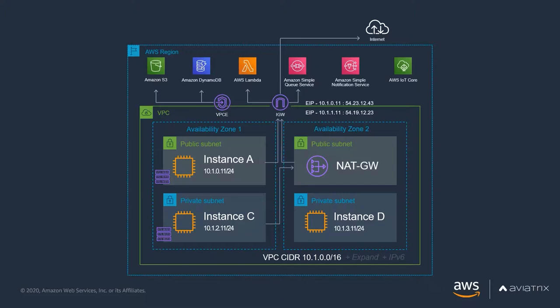There are also services like S3 and DynamoDB that don't sit inside of a VPC but are public services. We have VPC endpoints to talk to services like S3, which allow you to privately connect to these services without leaving the Amazon network. Your EC2 instances connecting to S3, for example, don't need to have public IP addresses.